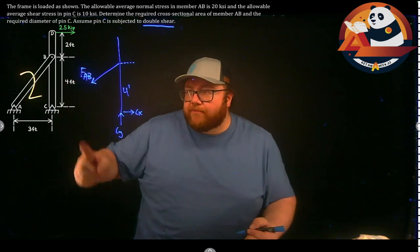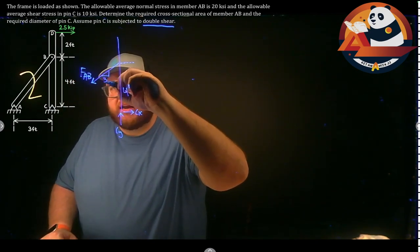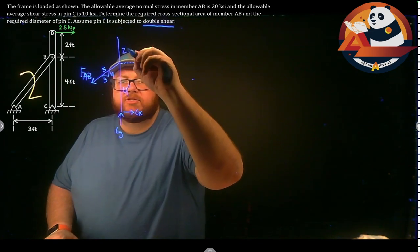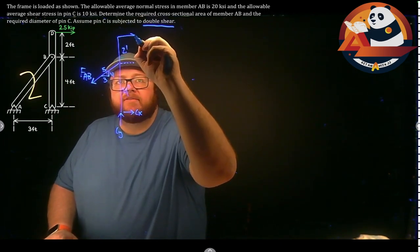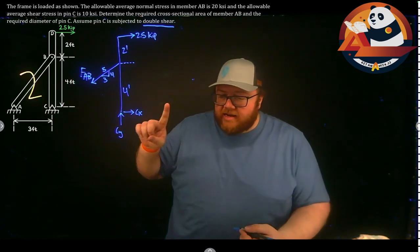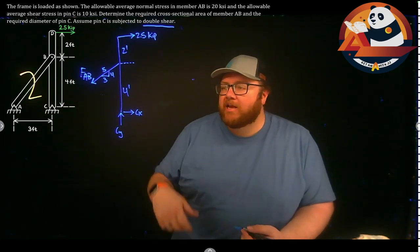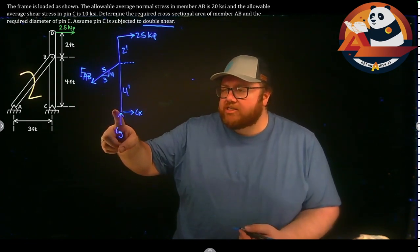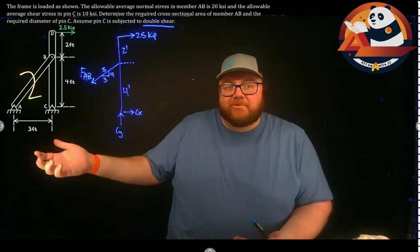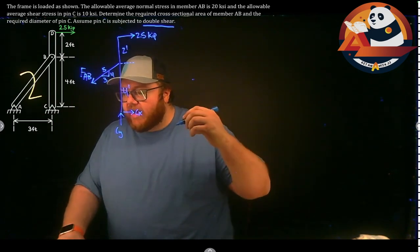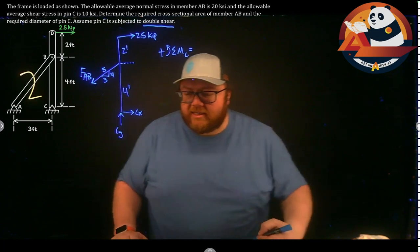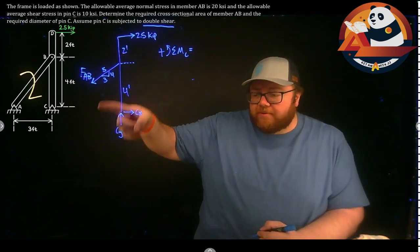The member goes over three feet and up four feet, so this is a 3-4-5 triangle. From B I go up two more feet to the very top where the 2.5 kip force is applied. I have three unknowns: F_AB, C_Y, and C_X. I'll start by summing moments at C — that will give me F_AB directly. Taking positive as counterclockwise.